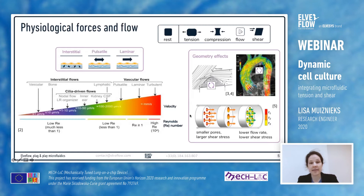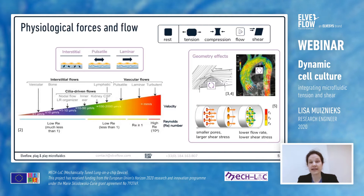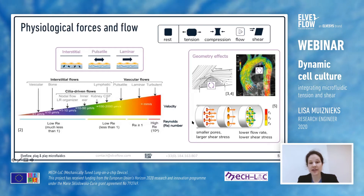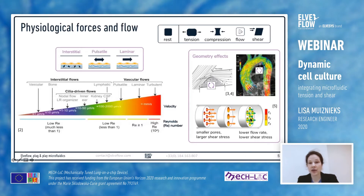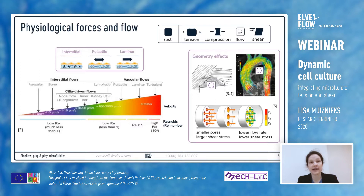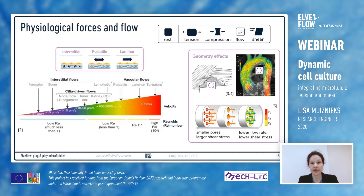Another example where geometry plays a large role in flow profiles and shear stress is in the interstitial spaces of bone, where for example the smaller the pores the larger the shear stress for a given flow rate. On the other hand, with larger pores and a lower flow rate, shear stress will be lower, and this has large implications in bone homeostasis and the tight coupling between bone formation and bone resorption.